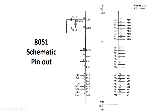Port 3's alternate functions include: RXD for receiving data serially from an external device, TXD for transmitting data serially from the CPU to an external device. INT1 bar and INT0 bar are used for external interrupts, allowing external devices to interrupt the CPU. Pins T1 and T0 are used in counter mode to count external clock pulses — T0 for Timer 0 and T1 for Timer 1.